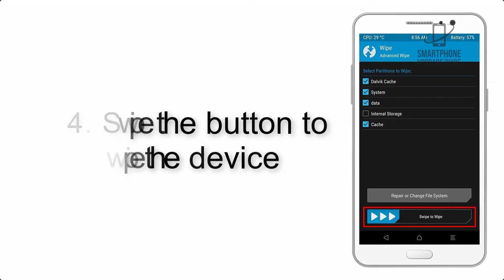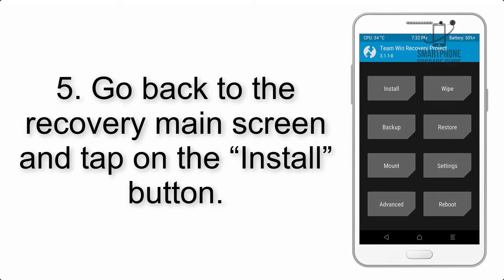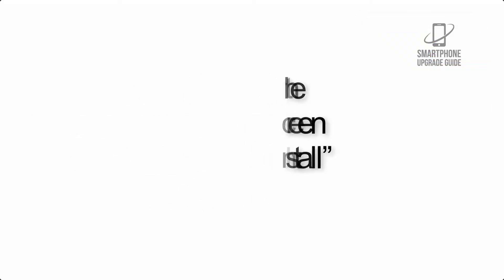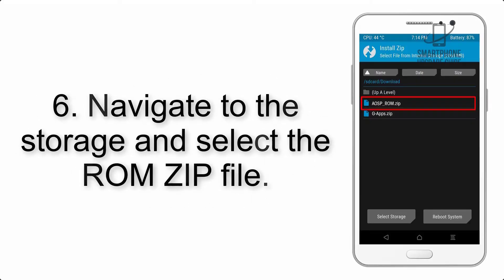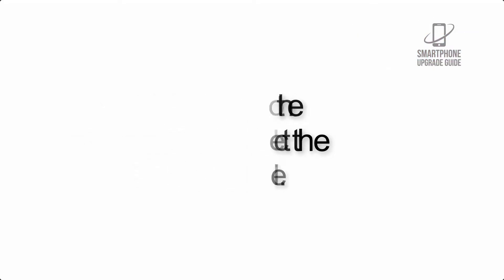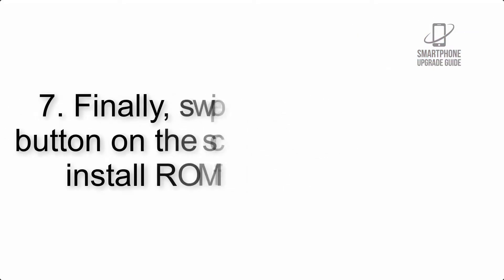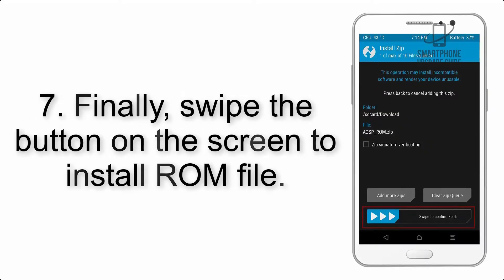Step 5: go back to the recovery main screen and tap on the Install button. Step 6: navigate to the storage and select the ROM zip file.